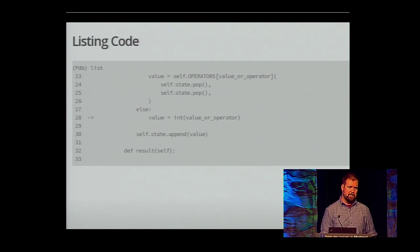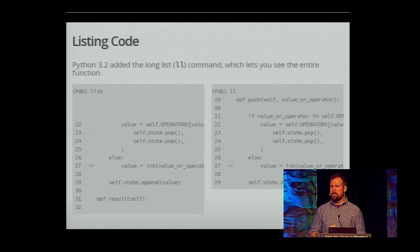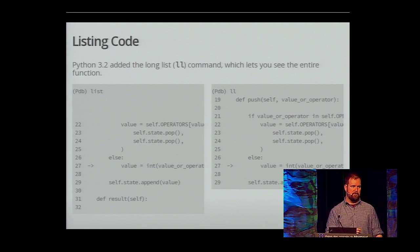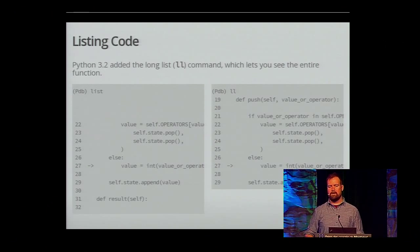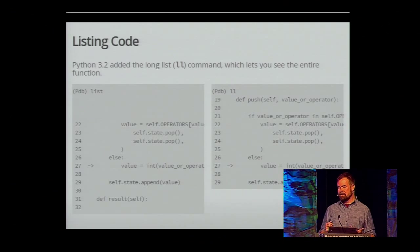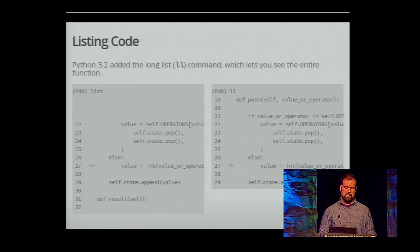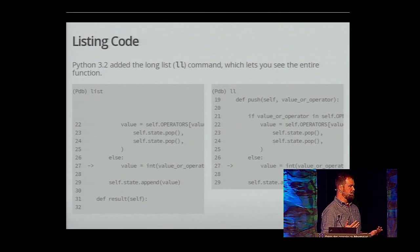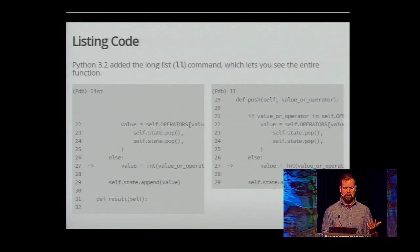Python 3.2 added the long list command, ll. On the left-hand side you've got the normal list, which shows five lines above and below. On the right-hand side you have long list, which only shows you the current method or function being executed. So it actually gives me information about the conditional and about the declaration, and omits the def result from the end, which clutters up the display.